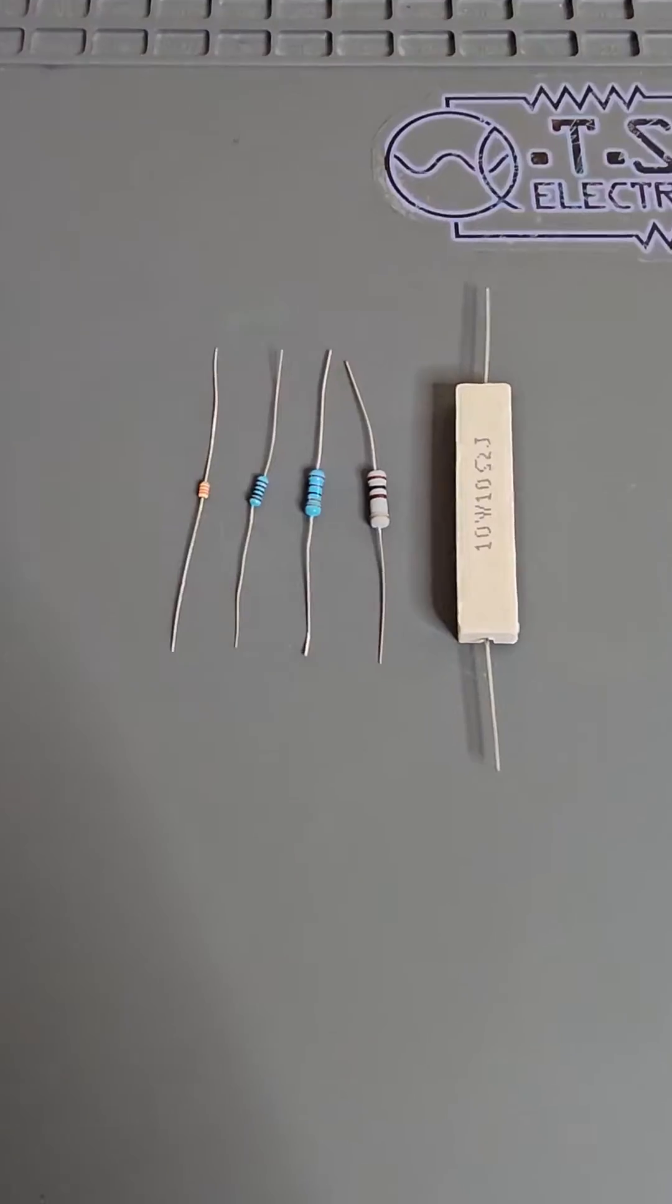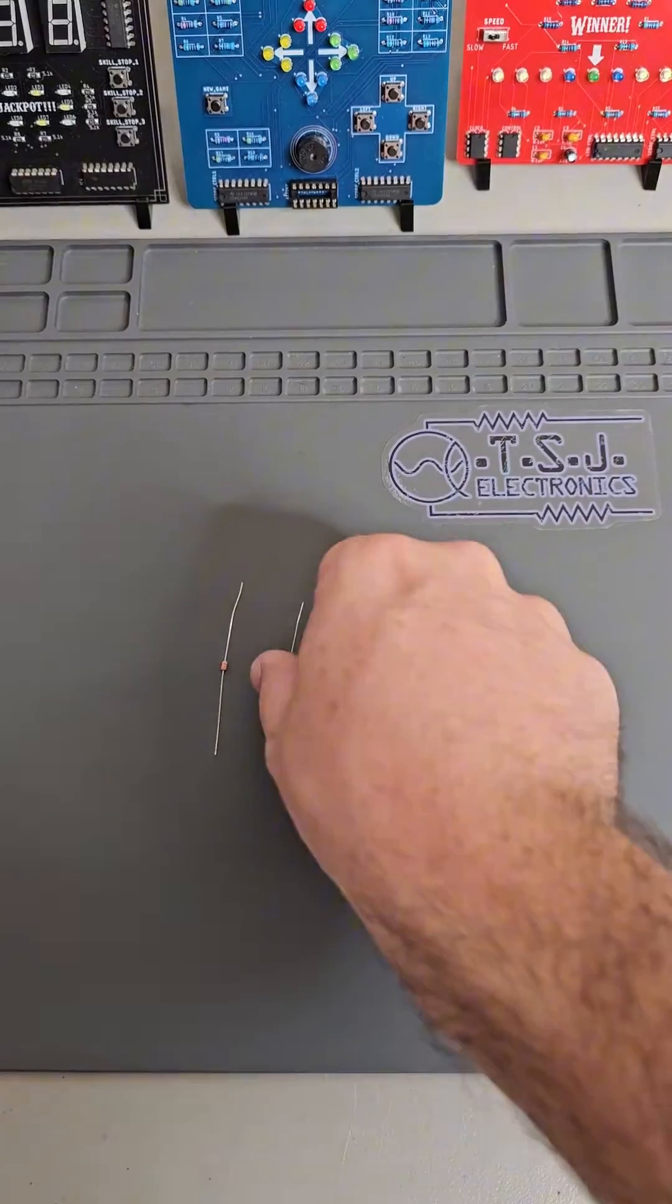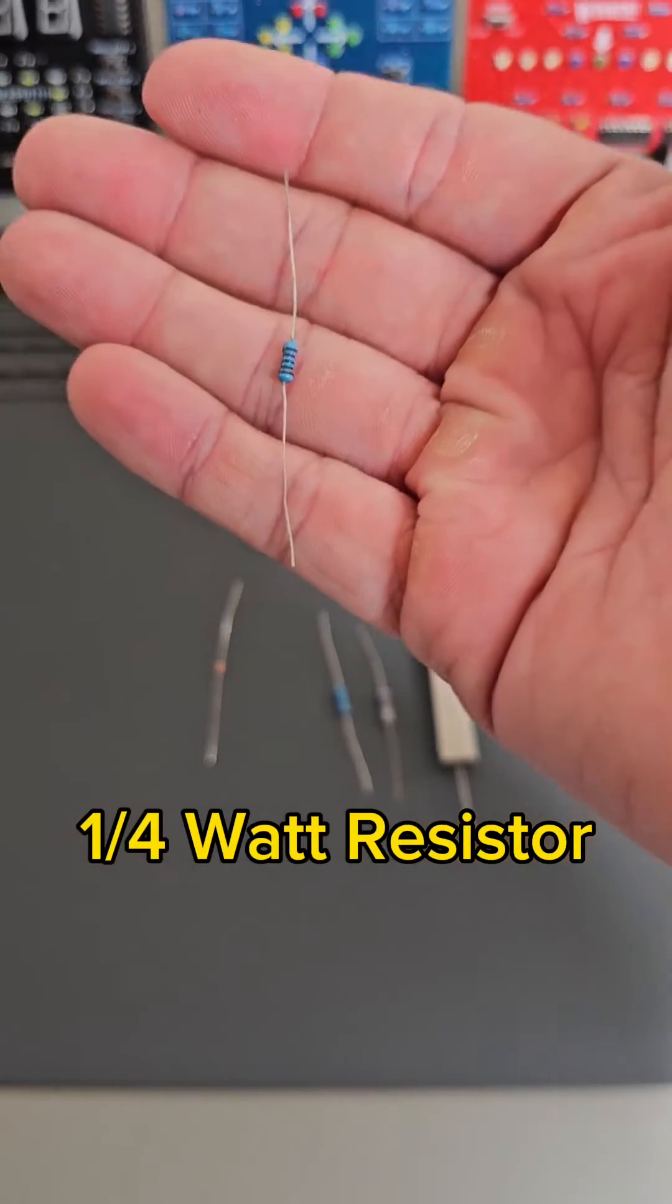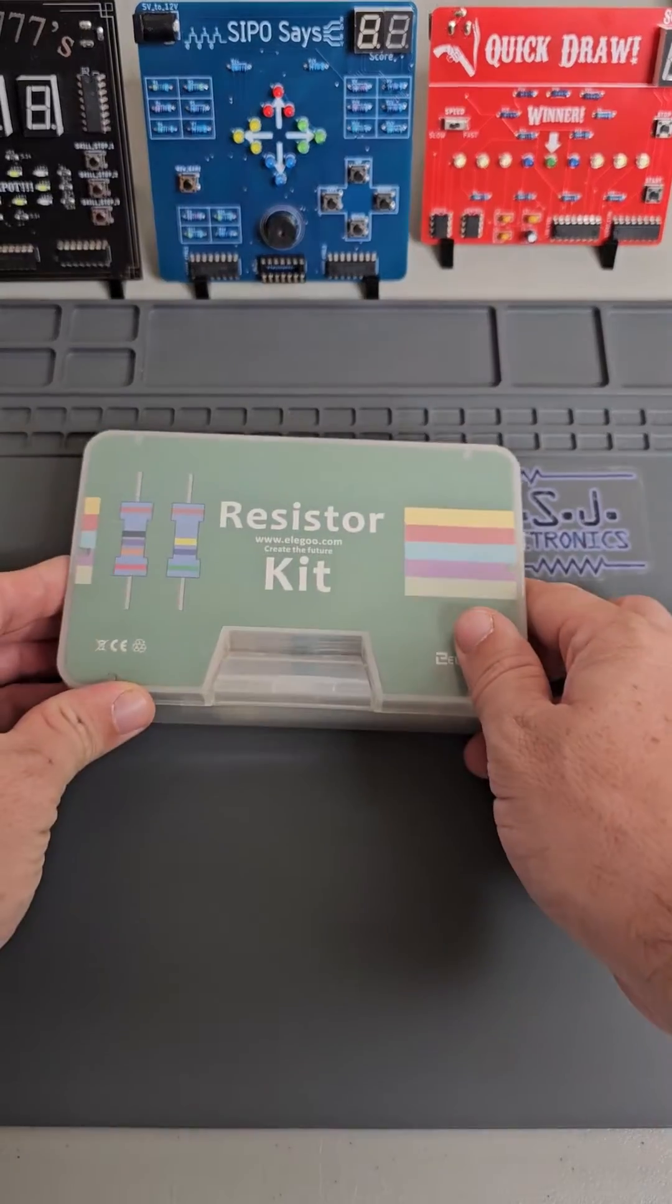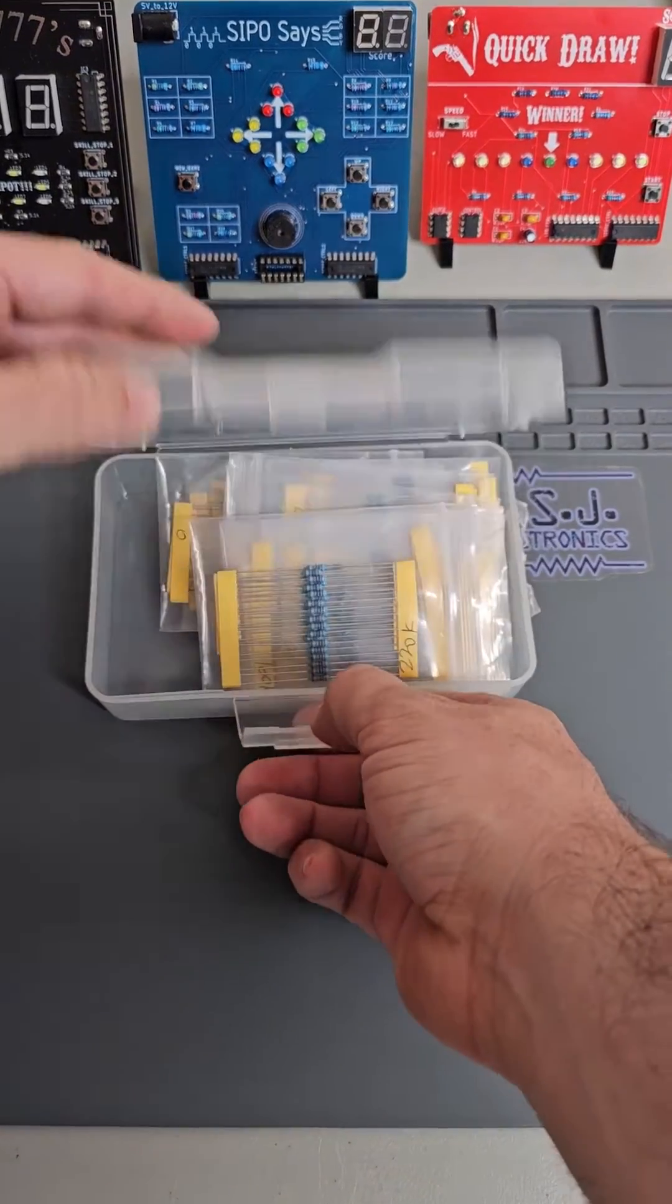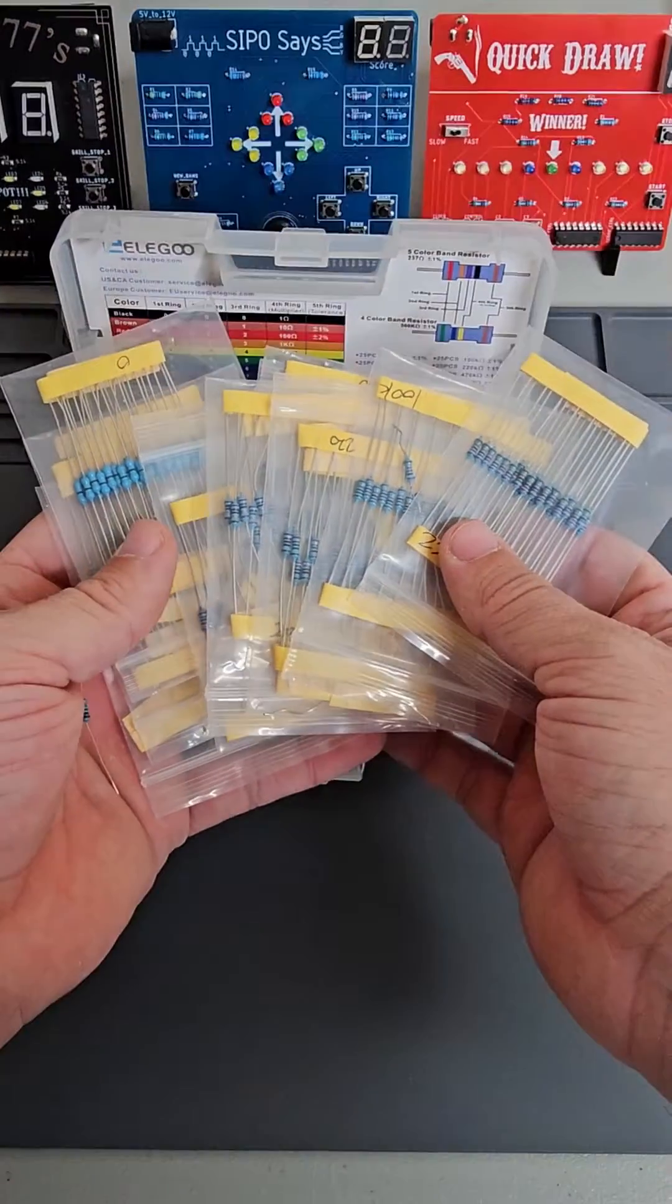Next up is resistors. Resistors come in different shapes and sizes. For breadboarding, I recommend a 1/4 watt resistor that looks like this. Resistors are used to control current and voltage in a circuit. For beginners, I recommend buying an assorted resistor pack. These will have all of the common resistor values that you need.